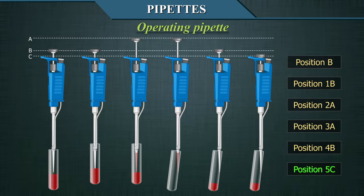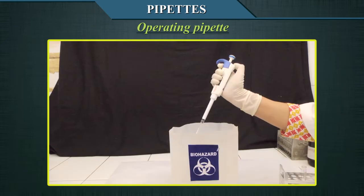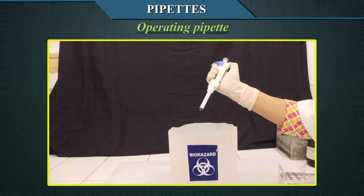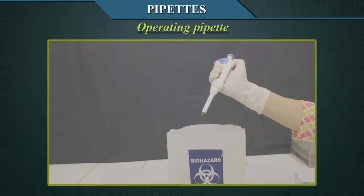Press the plunger gently until it reaches the second limit on the piston's path. This expels any fraction of liquid still in the pipette's tip by forcing out the air in the chamber through the tip. Keep the plunger pressed at the second limit while the pipette is removed from the receiving tube. Once the pipette is removed, gently release the plunger to the blank position. Then discard the pipette's tip by pressing the expulsion mechanism button.